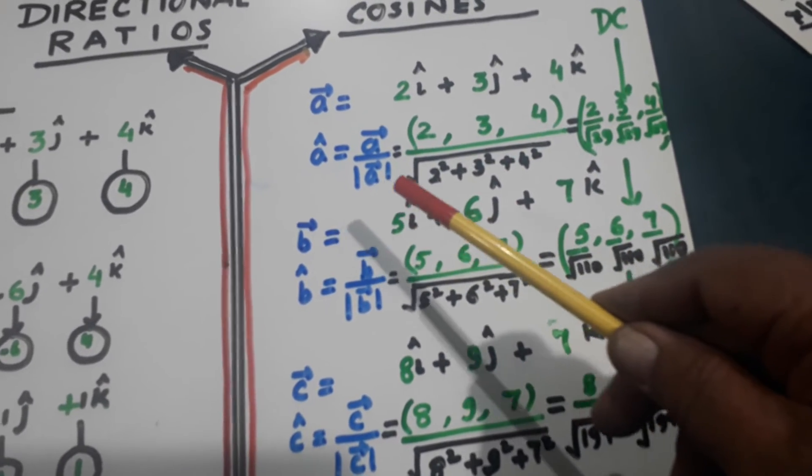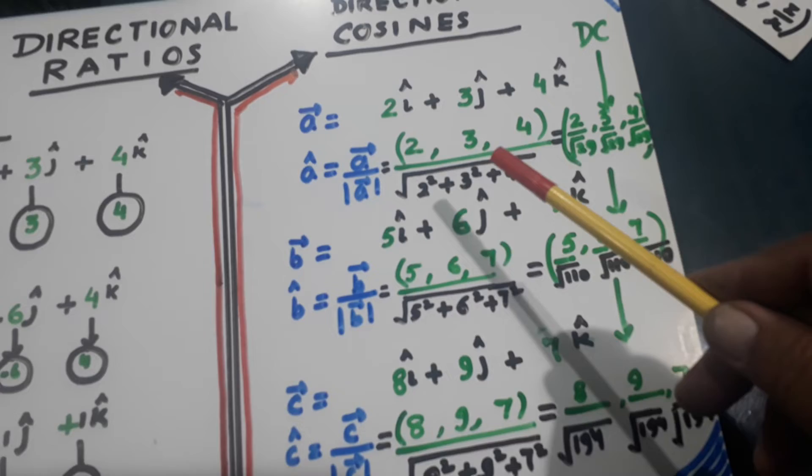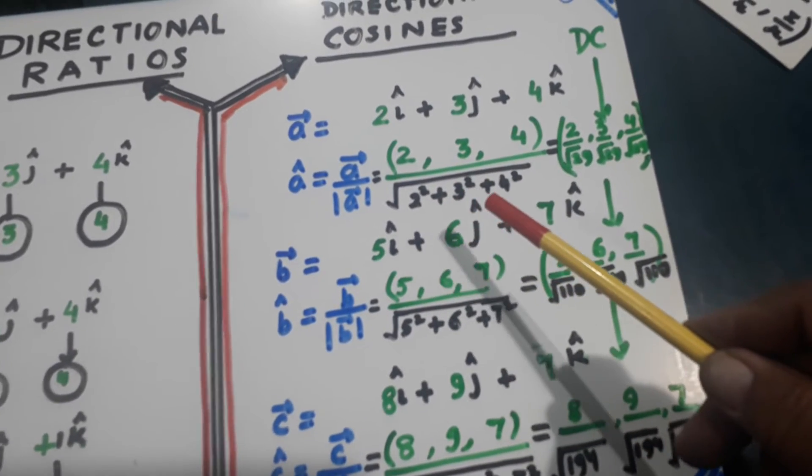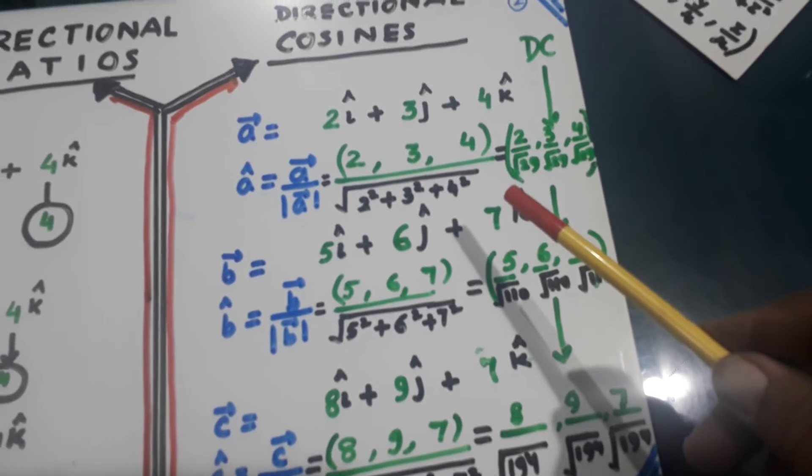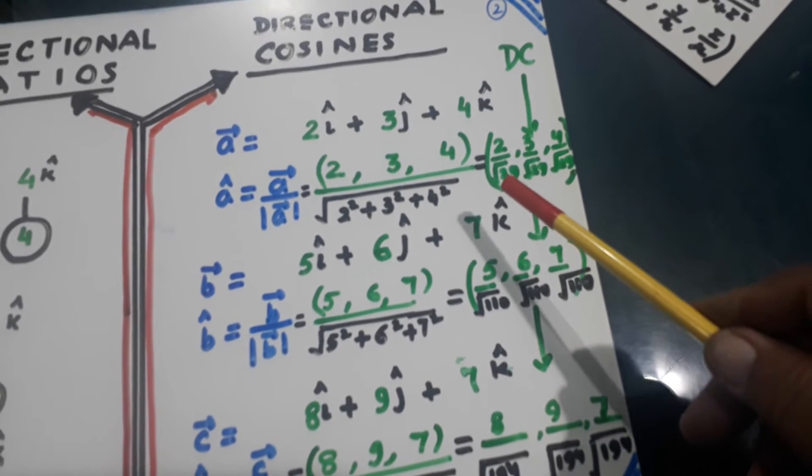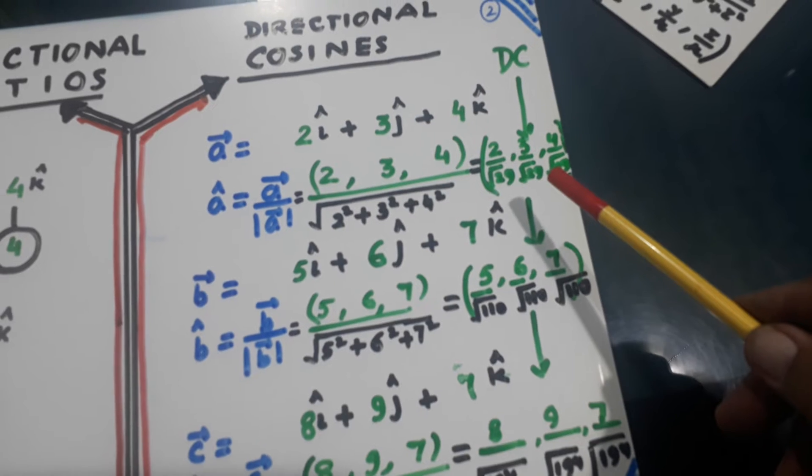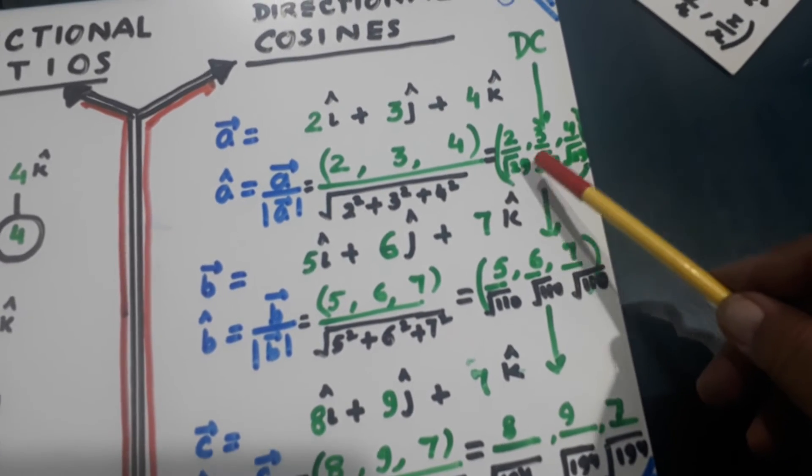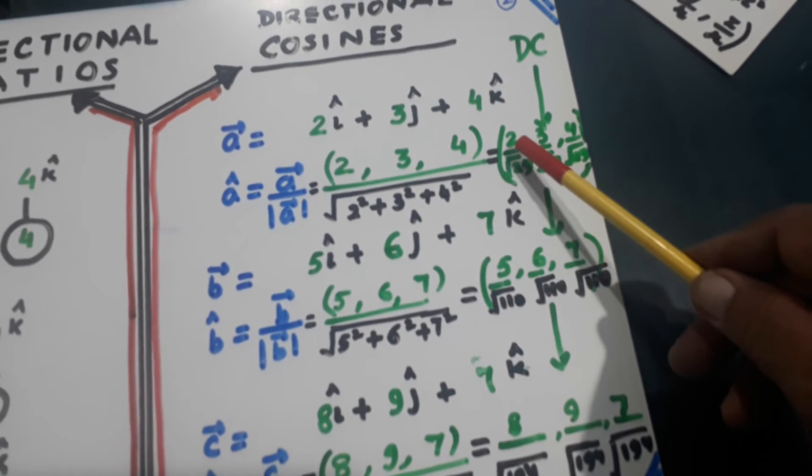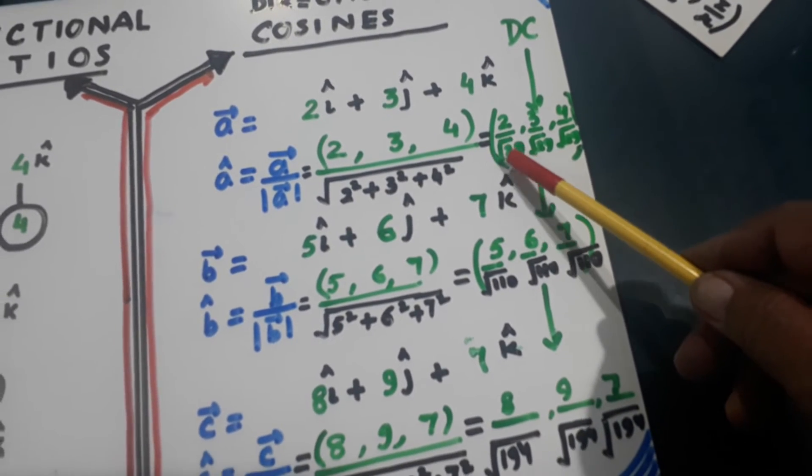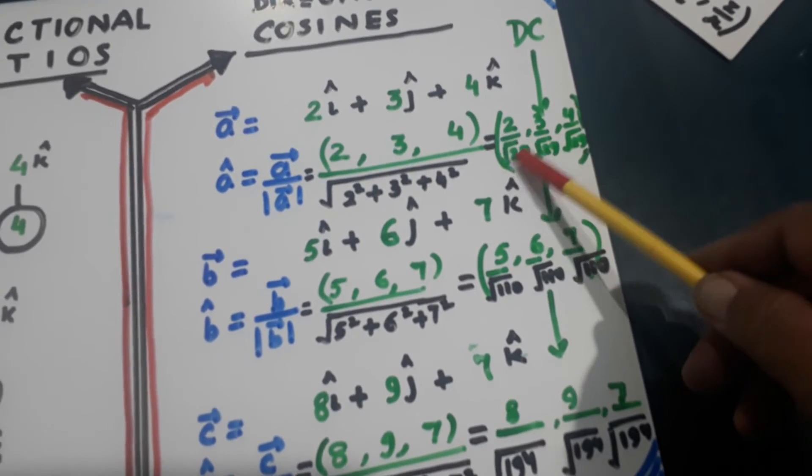So vector a is 2i plus 3j plus 4k. Its unit vector will become 2, 3, 4 divided by under root 2 square plus 3 square plus 4 square. That is under root 29. So 2 over root 29, 3 over root 29 and 4 over root 29. They are the DCs. Numerator is the base and this is the hypotenuse. It becomes cos. So directional cosines.